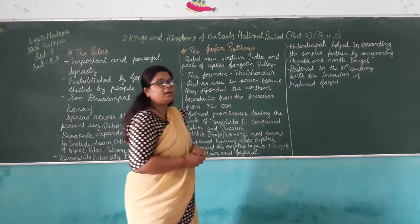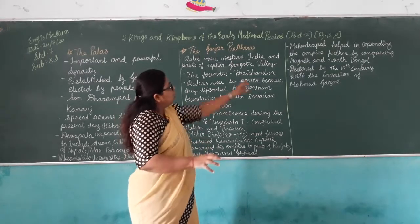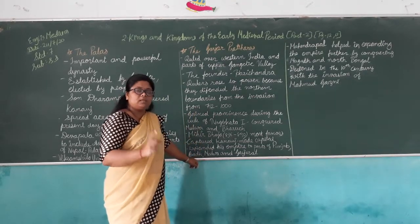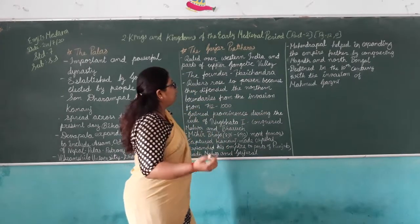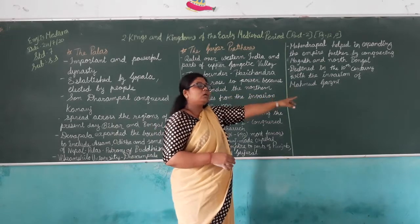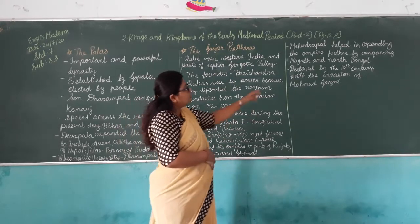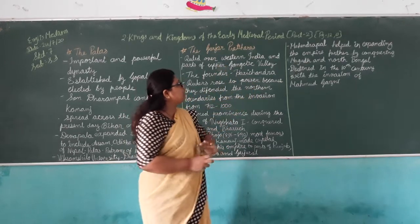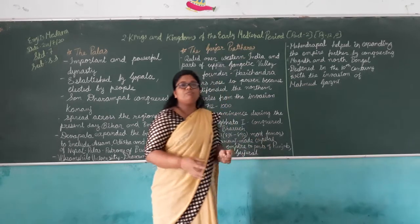Mahendrapal was the son of Mihir Bhoja and helped further expand the empire by conquering Magadha and North Bengal. The dynasty declined in the 10th century when the invader Mahmud of Ghazni invaded their kingdom.